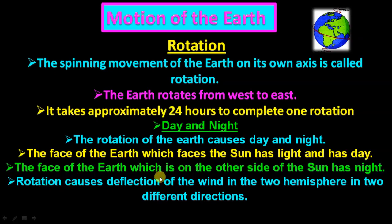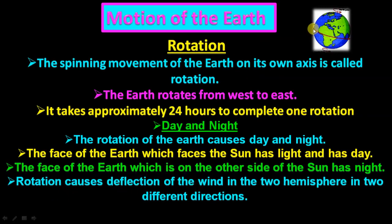Rotation also causes deflection of the wind in the two hemispheres in two different directions. So rotation has two effects: it causes day and night, and also causes deflection of the wind — meaning when wind touches the equator, it starts moving in both hemispheres.